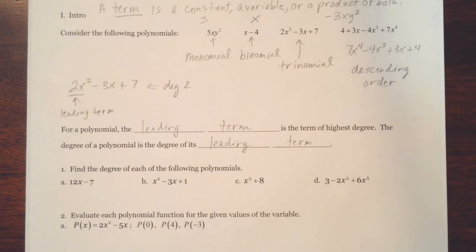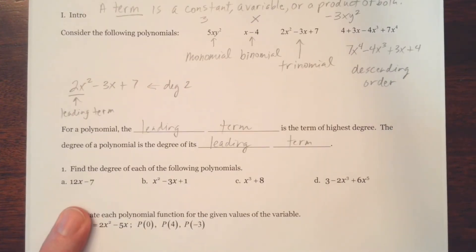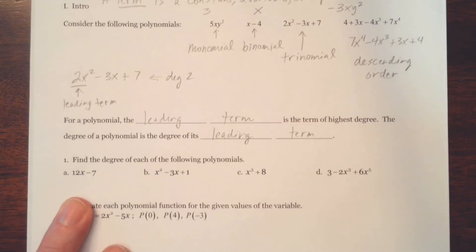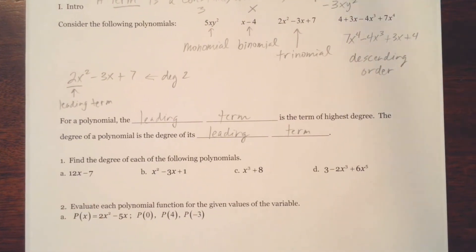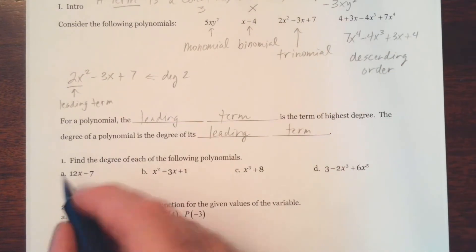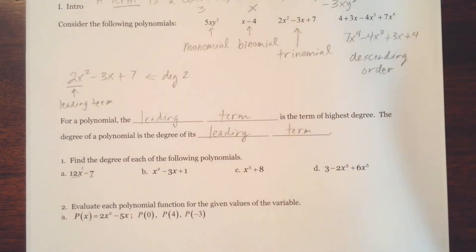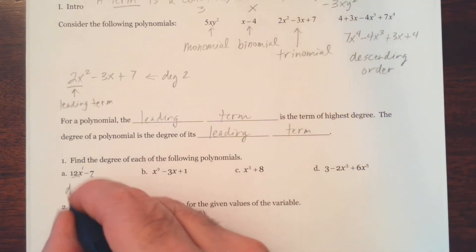Alright, so there are four problems for you to do here in problem 1. It says find the degree of each of the following polynomials. So if you want, you can go ahead and do those and stop the video and then watch it. Alright, so this term has a degree of 1. We said a constant has a degree of 0. Notice this is a binomial. And so this is a binomial with a degree of 1.